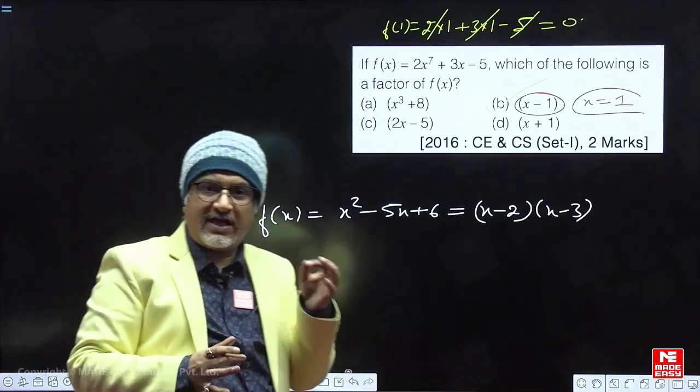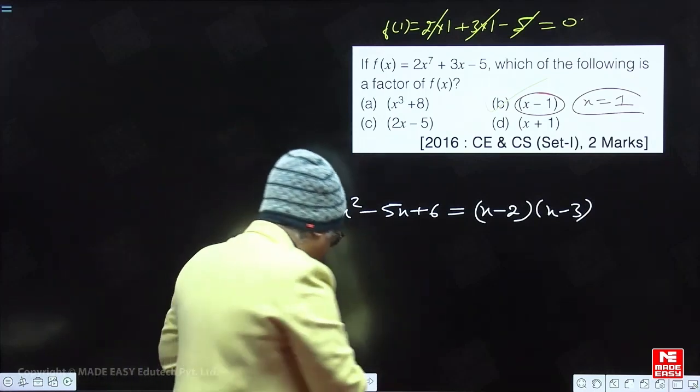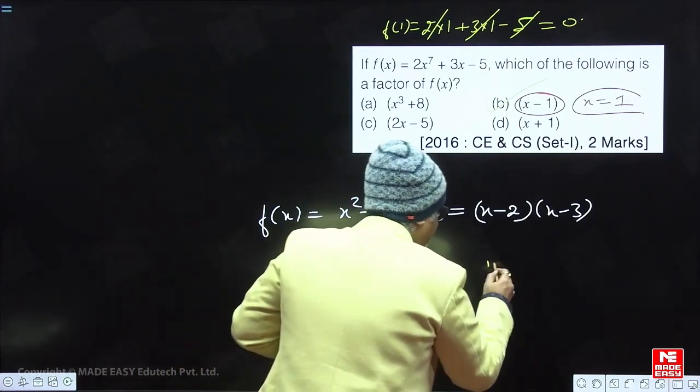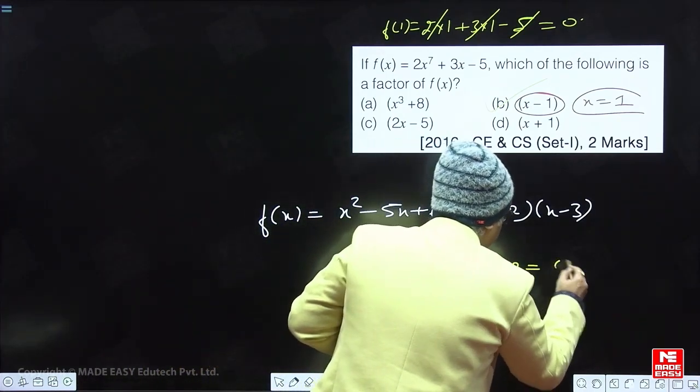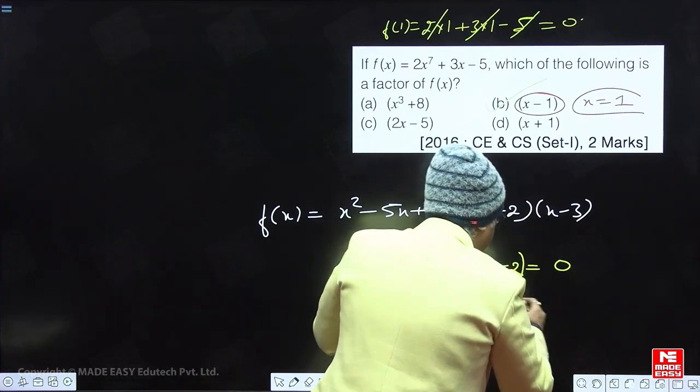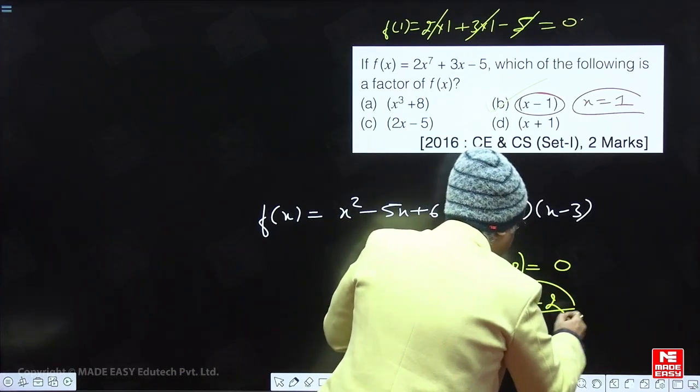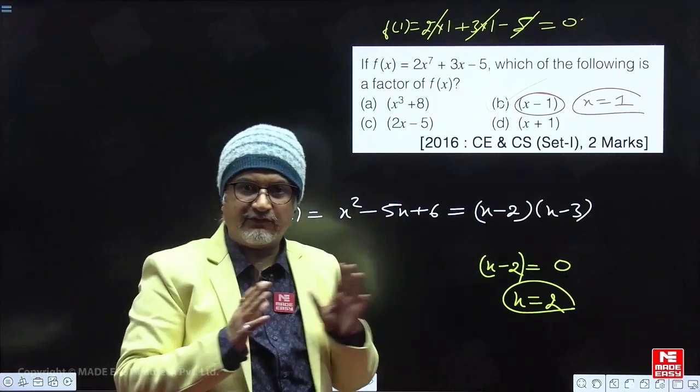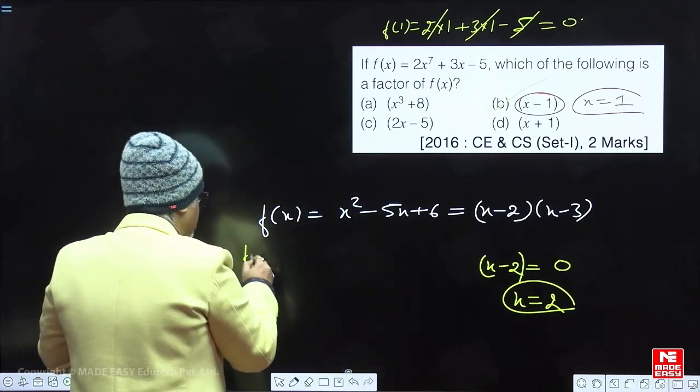Now, because x minus 2 is a factor of the equation, try to understand what I am saying. x minus 2 is a factor of equation. If x minus 2 is a factor of equation, on putting x minus 2 is equal to 0, on putting x equal to 2, this equation will become 0. This equation will vanish. So f(2) should come out to be 0.